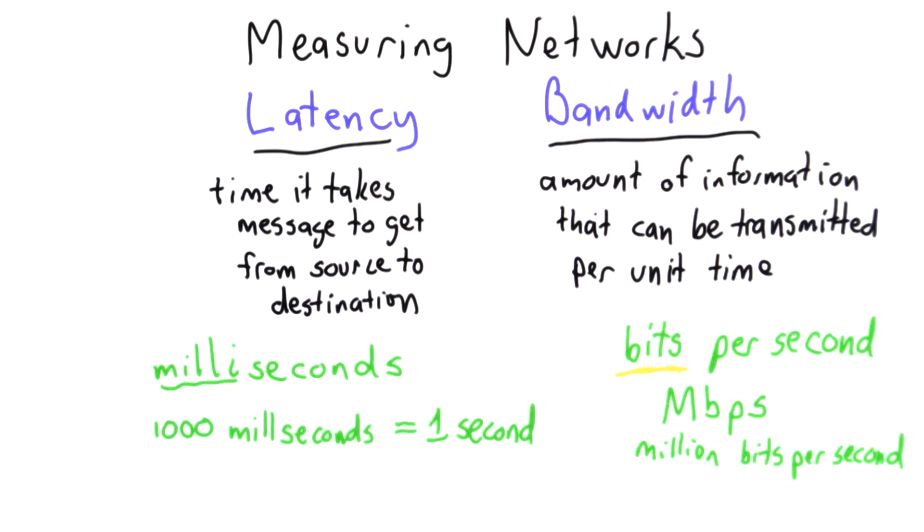So that's what bandwidth is. It's a measure of the amount of information that we can send, and we're measuring the number of bits. Each bit is one yes-or-no decision.